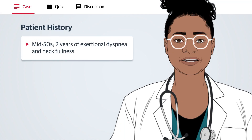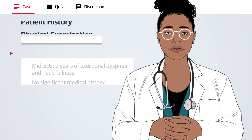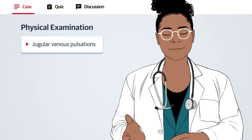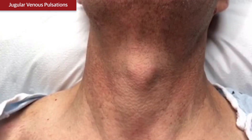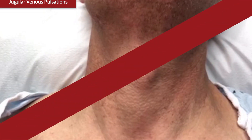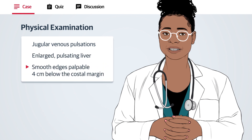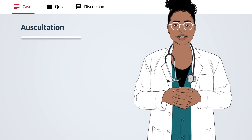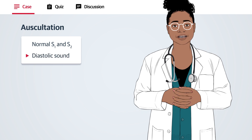A man in his mid-50s has two years of exertional dyspnea and neck fullness without any other significant past medical history. On physical examination, he has jugular venous pulsations while sitting upright at 90 degrees, as shown here in this video, and an enlarged pulsating liver with smooth edges palpable 4 centimeters below the costal margin. Auscultatory findings at the left lower sternal border show a normal S1 and S2 with a diastolic sound and no murmurs.